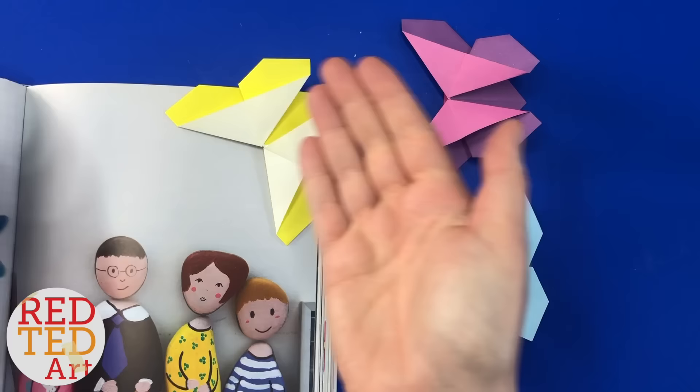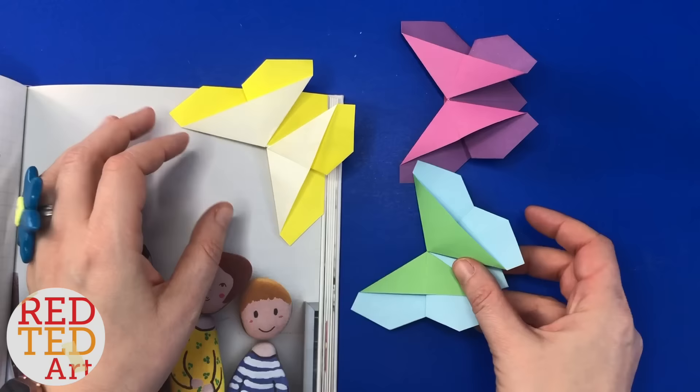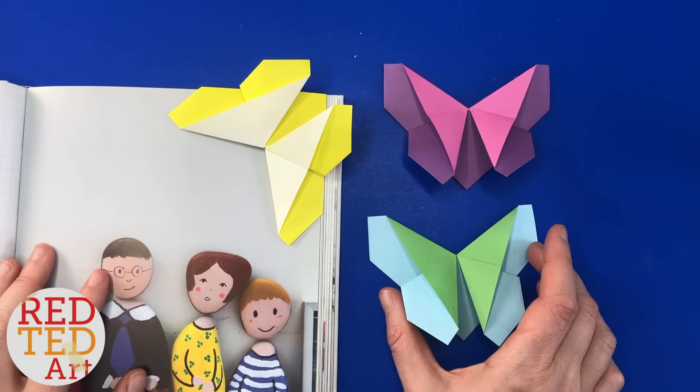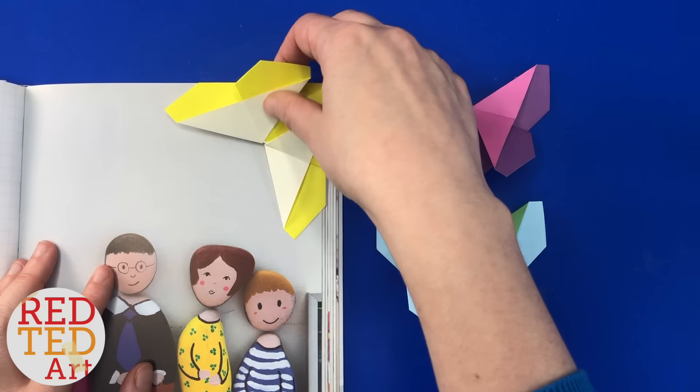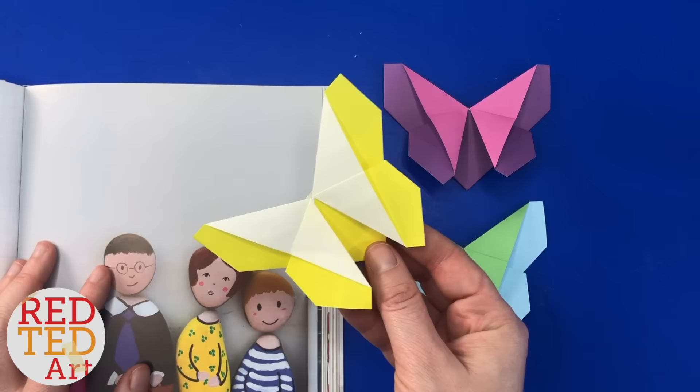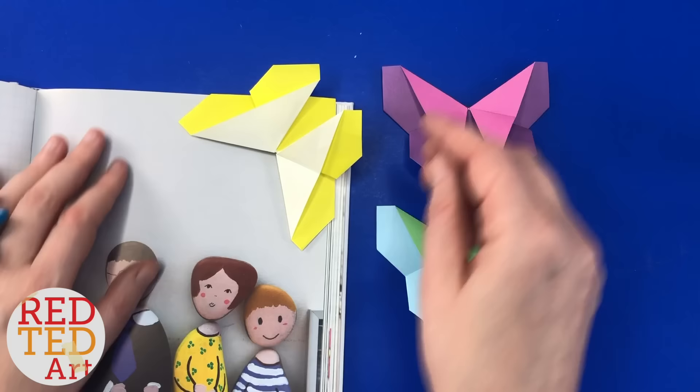Hello, hello! Welcome back to Red Ted Art. It's bookmark corner time again. This is a different type of corner bookmark. I think it's super lovely, super fun. I saw it on a channel called Dynamite Decor. They don't seem to be active anymore, so I thought it'd be really nice to share this lovely origami butterfly with you today. I think it's super clever, super cute, and quite quick to learn how to make. So come on, let's take a look and see how they're made.